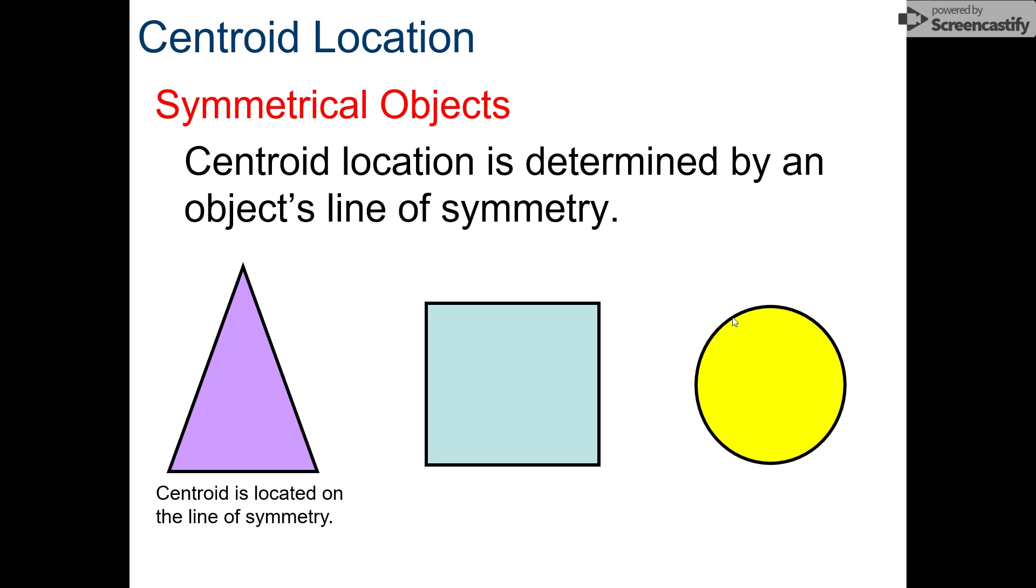When we're talking about centroids and symmetrical objects, the centroid is very easy to find. The centroid of a symmetrical object ends up being near the center of that object. When we look at the triangle and where the line of symmetry is, if you drew a line down the middle and folded that shape in half, it would look exactly the same. The line of symmetry is right down the middle and our centroid falls on that line of symmetry from left to right. Vertically, the centroid is actually about a third of the way up.